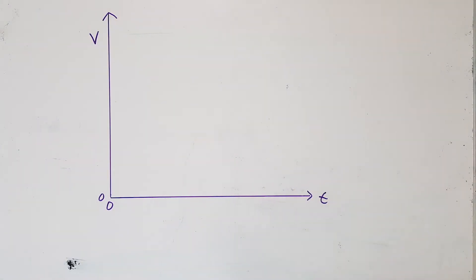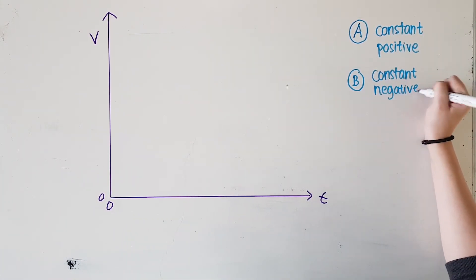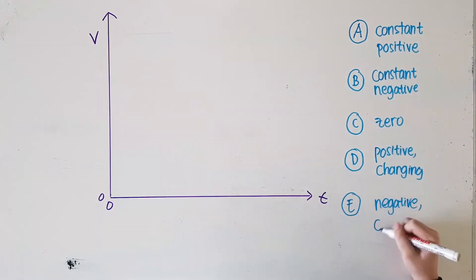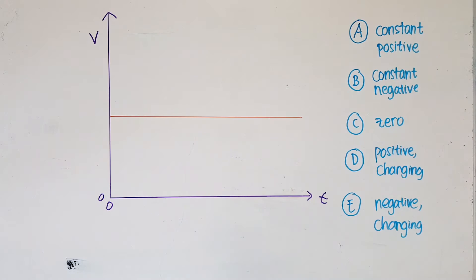Don't forget the graphs too. As we've shown before, acceleration graphs are divided into five types: constant positive, constant negative, 0, positive changing, and negative changing. These are the lines with their respective meanings, in case you forgot.